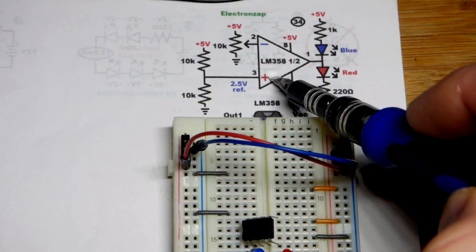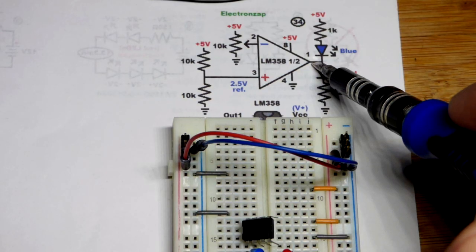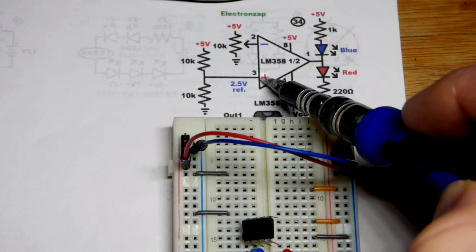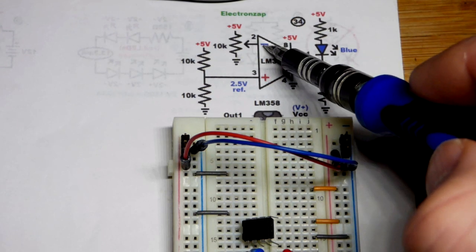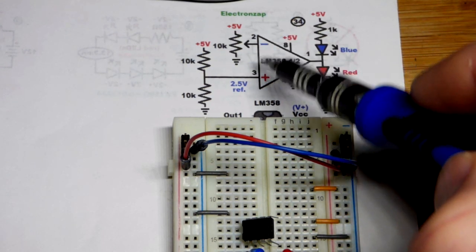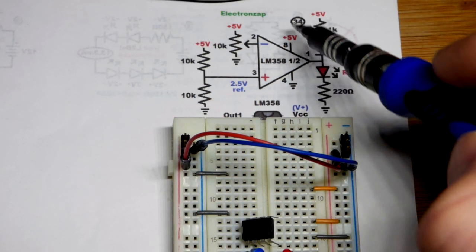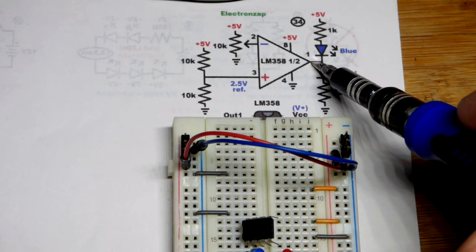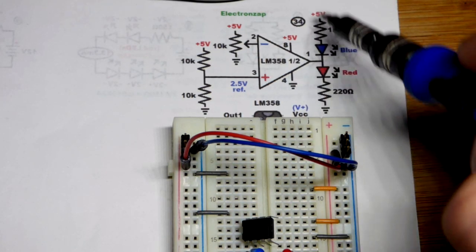The output always wants to be more like the non-inverting input than the inverting input. Since our signal is going there, the output is going to want to be the opposite of it. We're just doing a comparison. Therefore it gets as close to the positive supply rail for a high output as it can and as close to the negative rail for a low output as it can.